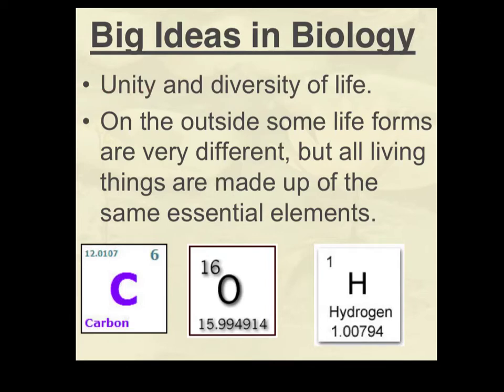Whether we're talking about humans, reptiles, insects, or plants, there are certain common things they all share. They all have cells, they're all composed of DNA, and they all contain carbon, oxygen, and hydrogen as their basic elements. There are certain unifying factors that tie together all living things on the planet, but there's also an amazing level of diversity that we'll study when we get to classification.